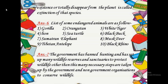Question 6: List some endangered animals. Answer: Gorilla, orangutan, white tiger, lion, sea turtle, black buck, Sumatran elephant, musk deer, Tibetan antelope, black rhino, etc. Question 7: What is being done to conserve wildlife? Answer: The government has banned hunting and has set up many wildlife reserves and sanctuaries to protect wildlife. Many necessary steps are also taken by the government and non-government organizations to conserve wildlife.